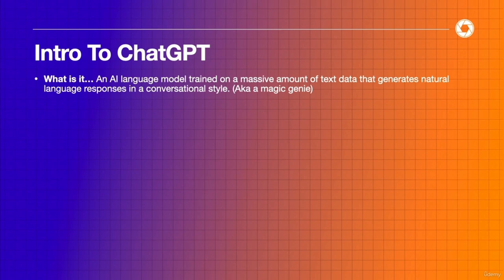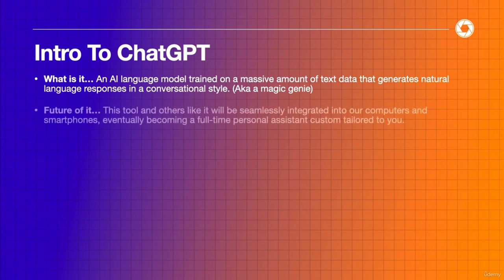What is ChatGPT? It's an AI language model trained on a massive amount of text data that generates natural language responses in a conversational style. Tools like this are really going to seamlessly be integrated into our entire daily lives — into our computers, our smartphones. Eventually we're going to have literal full-time AI assistants that will know your demographic, your spending habits, your emotional tendencies, and all your personality traits. This is the first wave of what that will be.